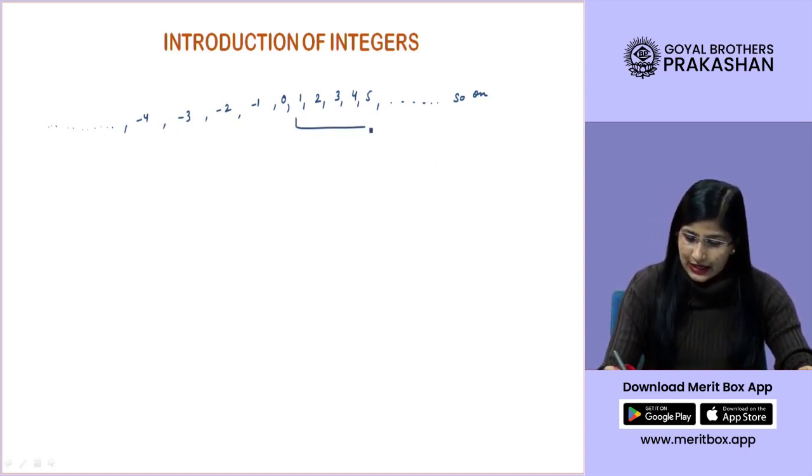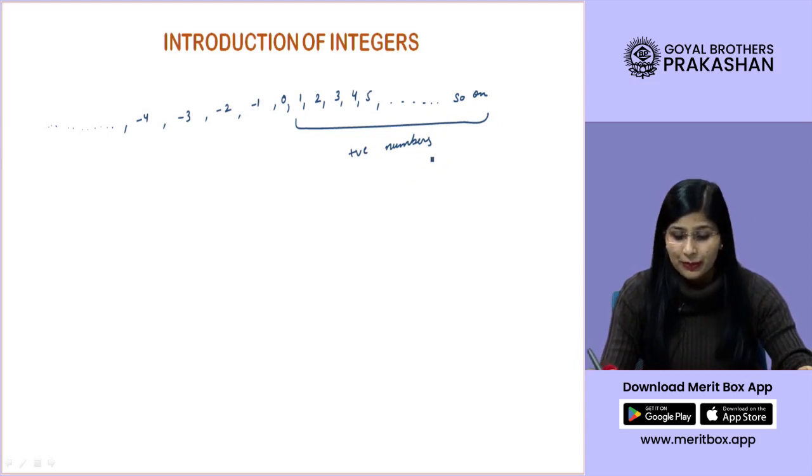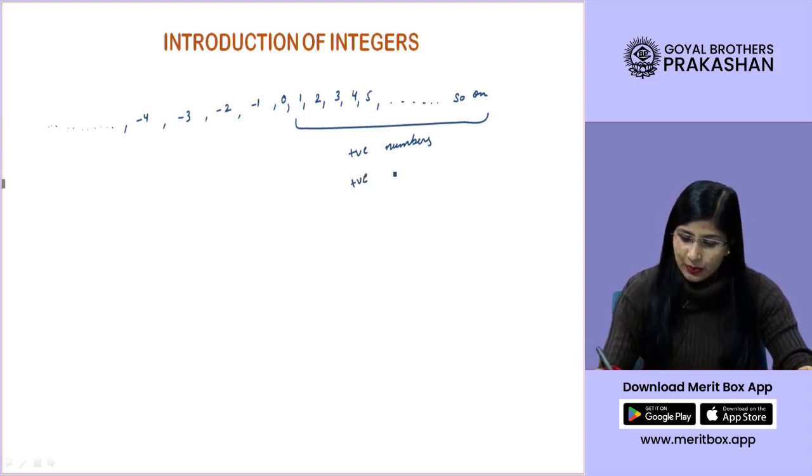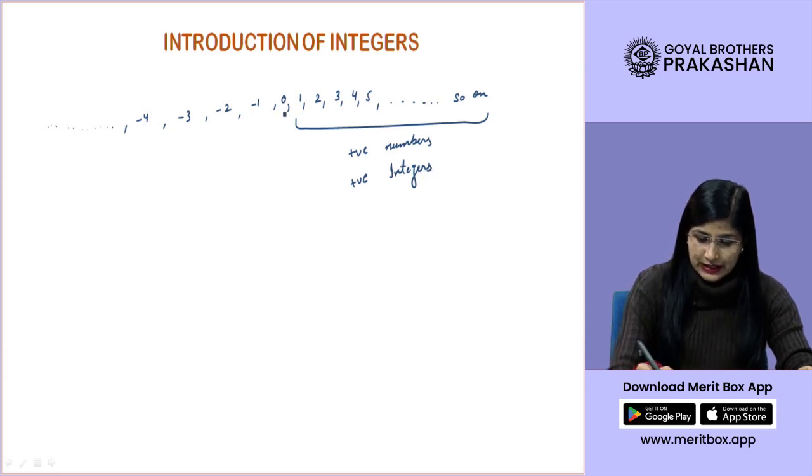Now, these are known as the positive numbers. All the counting numbers are positive numbers or you can call them as positive integers. 0 is neither positive nor negative.